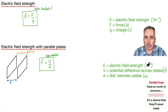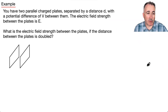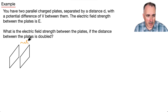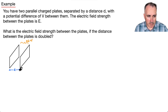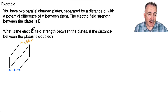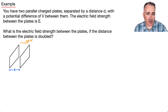Let's look at a situation where we have two parallel charged plates separated by a distance D with a potential difference of V between them. We know the electric field strength between them is E. Now we have a situation asking: what happens to the electric field strength if the distance between the two is doubled? In other words, D gets twice as big. What happens? Let's take a look at the equation. For parallel plates, E equals V over D.